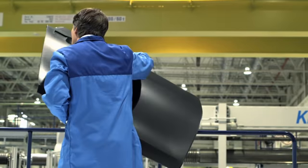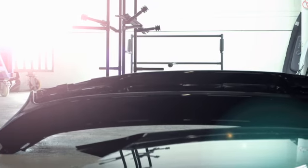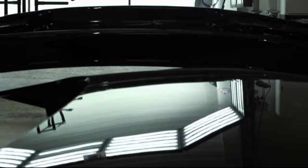Almost like the skin of the human body, the thermoplastic external skin protects the vehicle from all environmental influences. Rust-free surface protection, which is also energy-saving and therefore sustainable in the production process.